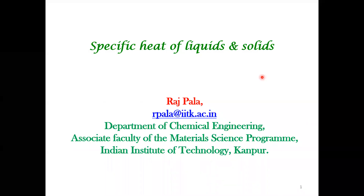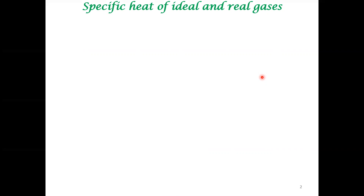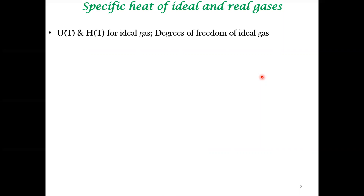In this lecture, we will look at the specific heat of liquids and solids. In the previous lecture, we had talked about specific heat of ideal and real gases. We had mentioned that the specific enthalpy and internal energy of ideal gases is only a function of temperature. This was shown via Joule's experiment, and we argued why this is so using atomic properties of ideal gas.